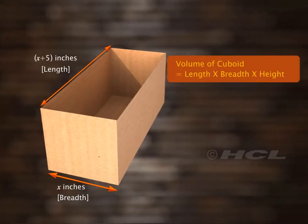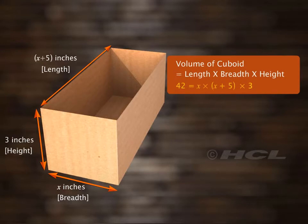Recall that the volume of the cuboid is equal to the product of its length, breadth, and height. Thus, on substituting the values in the formula, we get 42 equal to the product of x, x plus 5, and 3.